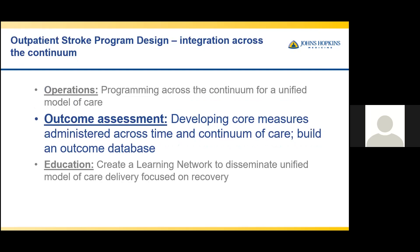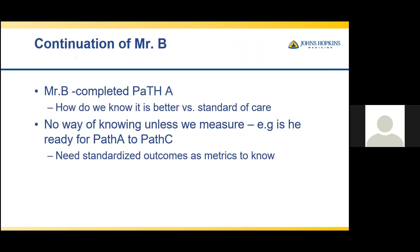Our next challenge revolves around outcome assessments, where we need to establish a set of standardized outcome measures used across the continuum of care, as well as build an outcome database. As I introduced Mr. B earlier, he has now completed the Path A segment of his care, where he received 18 sessions per discipline in four weeks. How do we know if this is better than the standard of care? And how do we know if he is ready to move on to the next path in care?